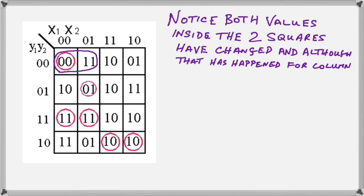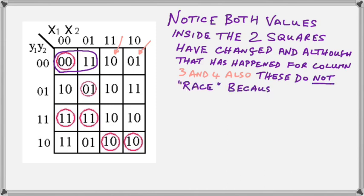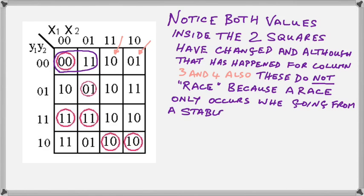Notice that both values inside the squares have changed, and although this has also happened in column 3 and 4, these do not constitute a race, because a race will only occur when moving from a stable state to an unstable state, either to the left or the right of it.